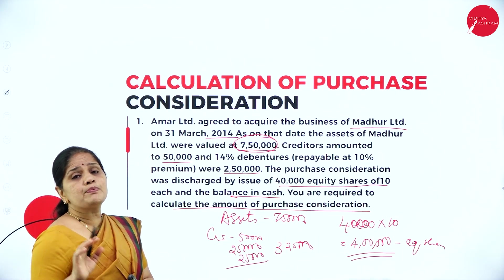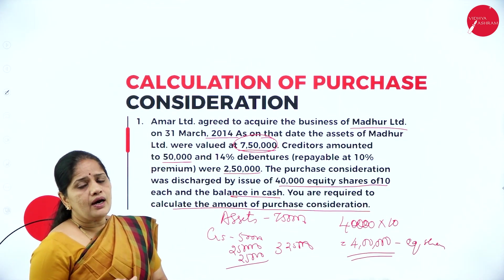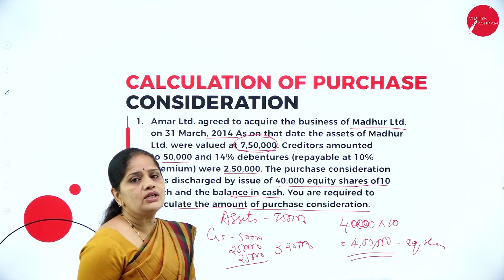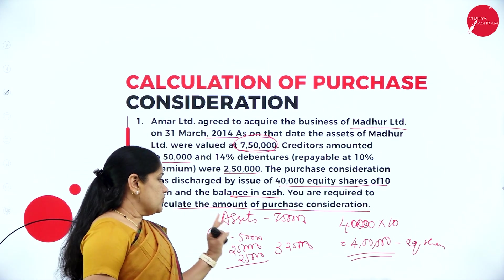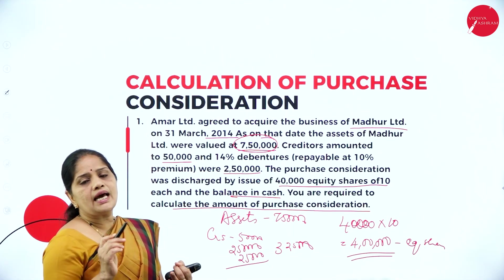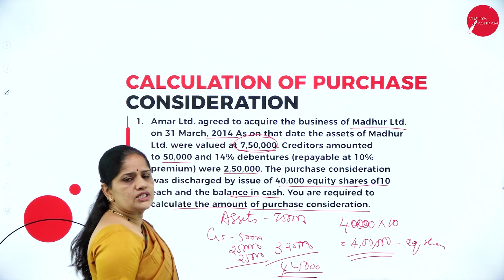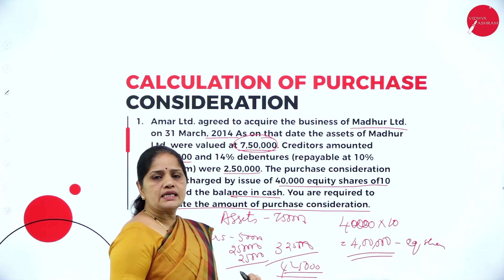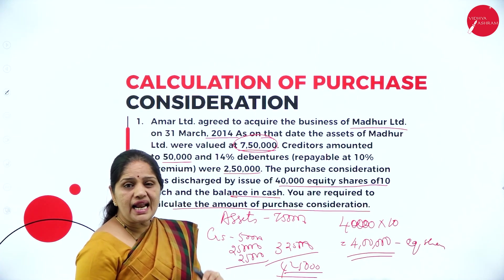The balance is paid in cash, but the exact cash amount is not mentioned. In the absence of this information, we should consider that the purchase consideration is to be calculated on the basis of the net asset method, since the value of assets and liabilities are both clearly given. So the purchase consideration is 4 lakhs 25,000. Out of this, 4 lakhs is the value of equity shares issued and the remaining 25,000 is paid in cash.